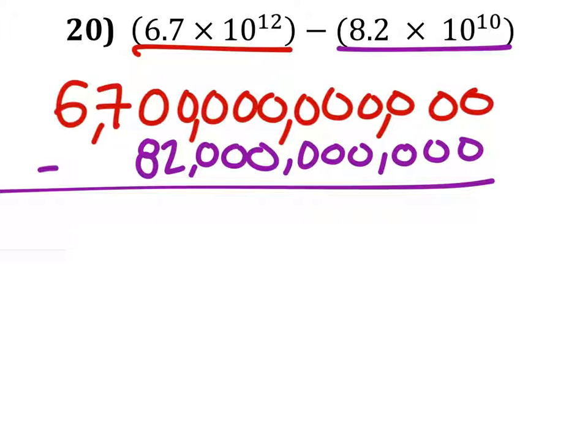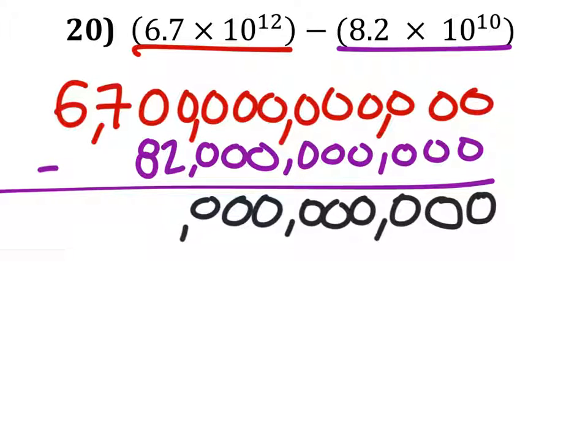Now this is where we get the hard part right here. We got 0 minus 0 is 0. 0 minus 0 is 0. And so after subtracting all the zeros, this is what we have right here.